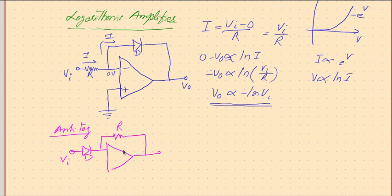So we have zero volt because of the virtual short. Therefore there is a voltage difference between the diode as Vi minus zero, and that voltage difference is going to produce a current. The current produced through this diode will be proportional to e to the power Vi.